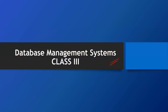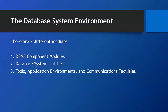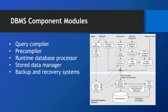Let's start this class. First of all, the database system environment — there are three different modules in a database: the database component module, the database system utilities, and tools/application environment and communication facilities. As we talked earlier, there are some component modules available in DBMS which are: query compiler, pre-compiler, runtime database processor, and stored data manager.